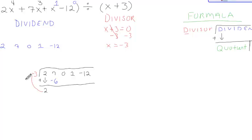2 times negative 3 gives us negative 6. 7 plus negative 6 gives us 1. 1 times negative 3 gives us negative 3. 0 plus negative 3 gives us negative 3. Negative 3 times negative 3 gives us 9.